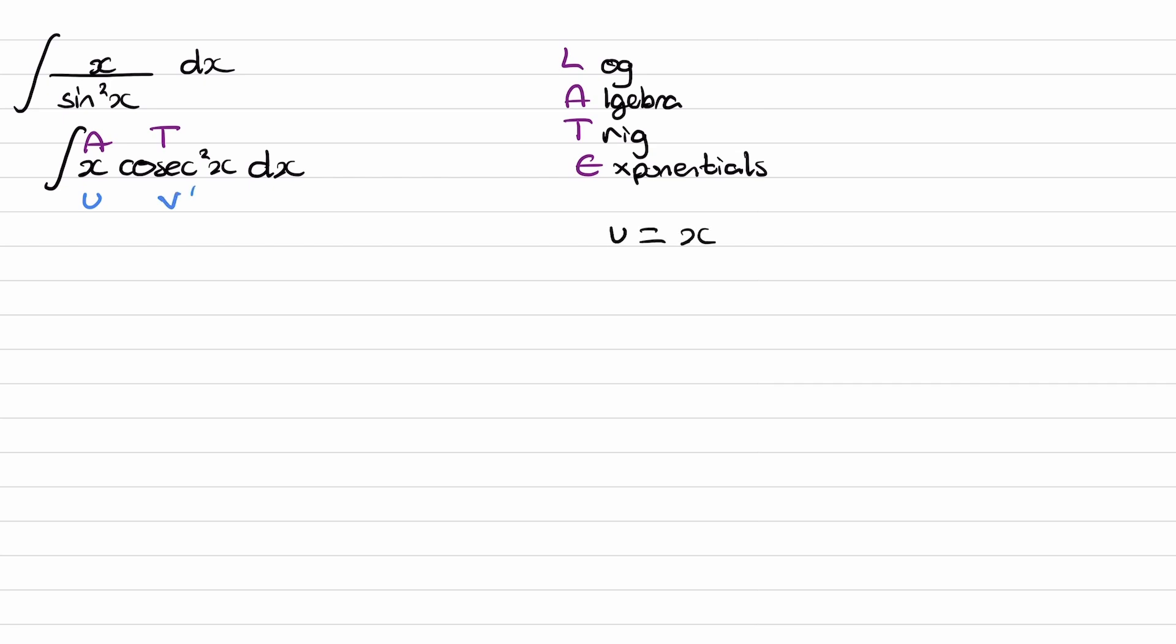So u is x, v dash is cot squared x. x differentiates to make 1, and cot squared x, the integral of that, that would be minus cot x. That's given to you in the formula booklet.